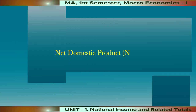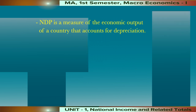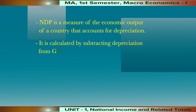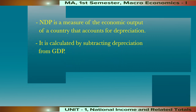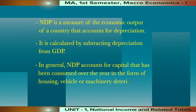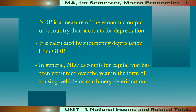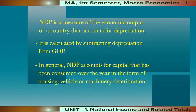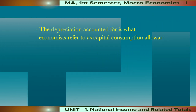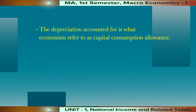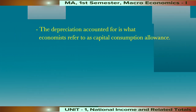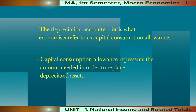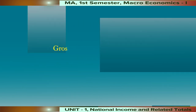Net Domestic Product is a measure of the economic output of a country that accounts for depreciation. It is calculated by subtracting depreciation from GDP. In general, GDP accounts for capital that has been consumed over the year in the form of housing, vehicle, or machinery deterioration. The depreciation accounted for is what economists refer to as capital consumption allowance, which represents the amount needed in order to replace depreciated assets.